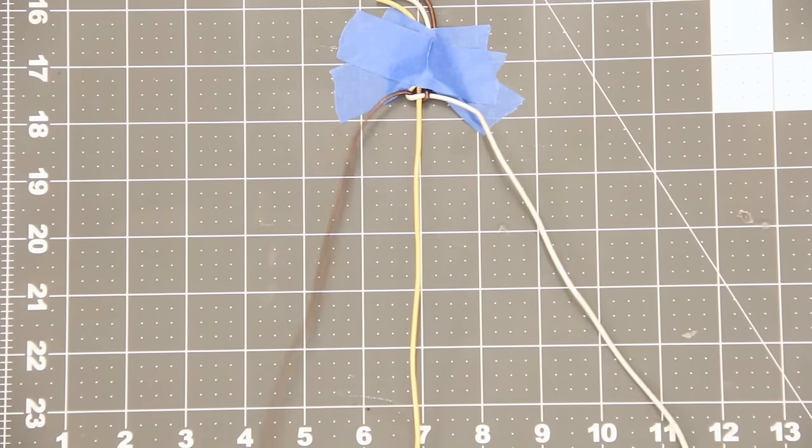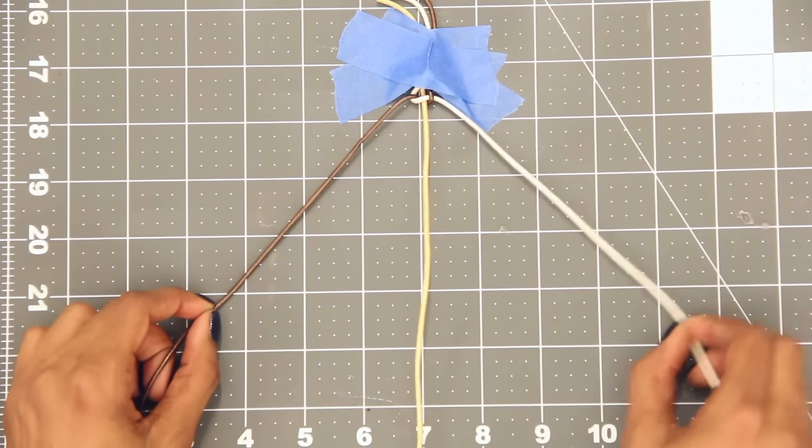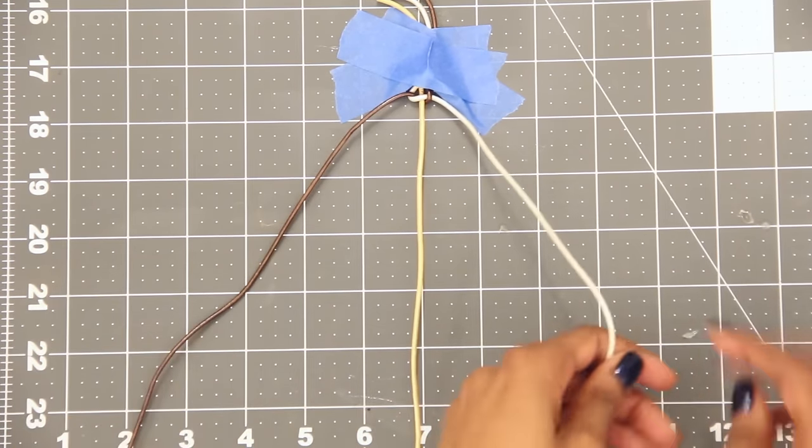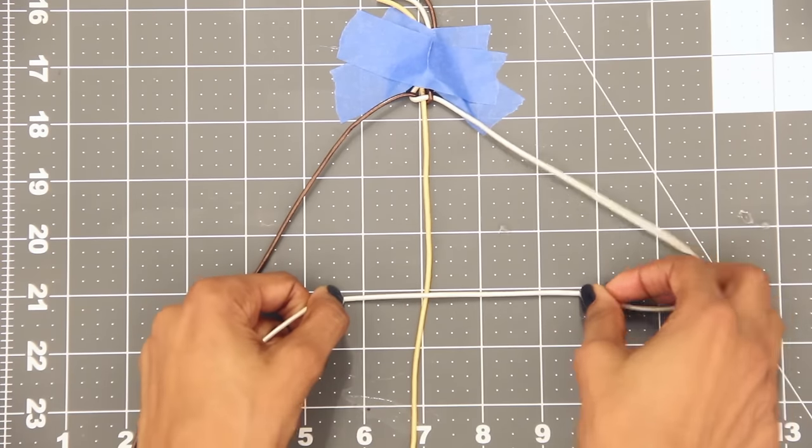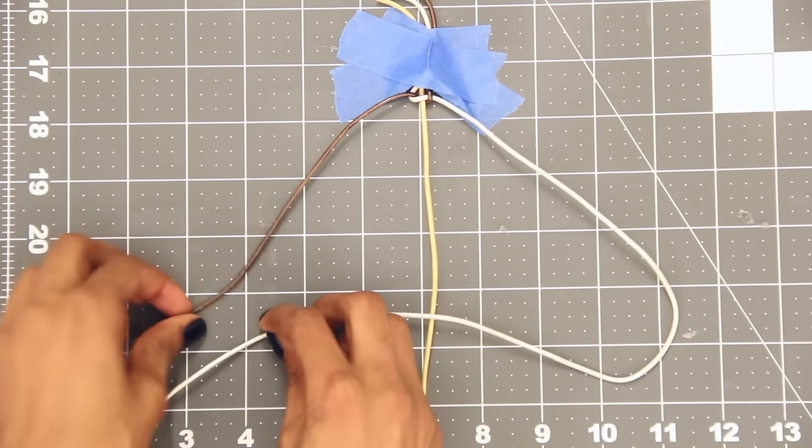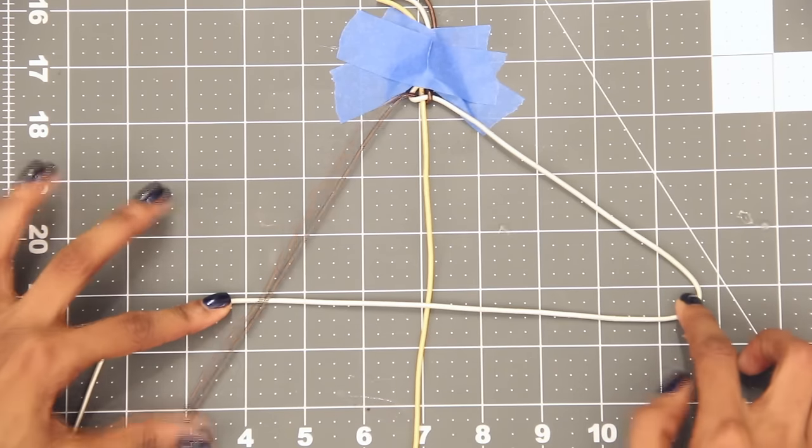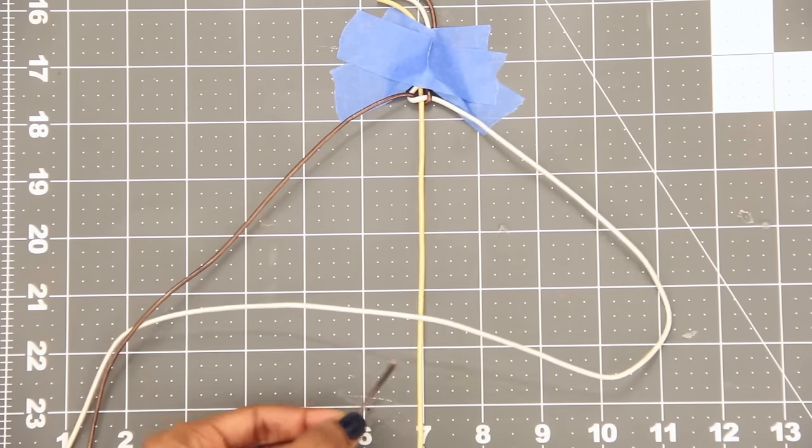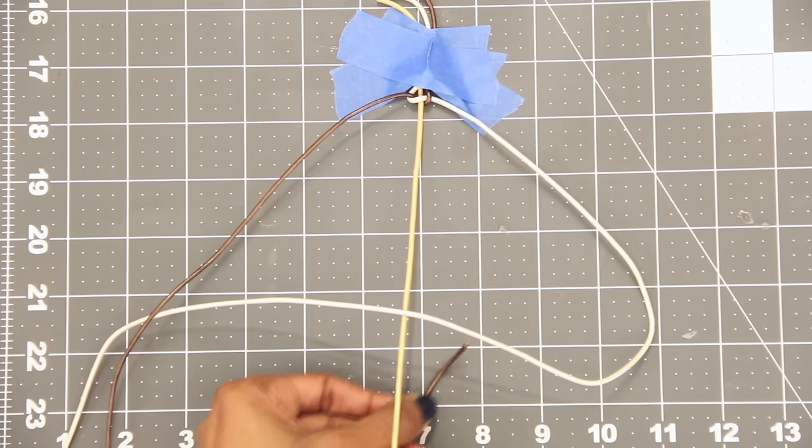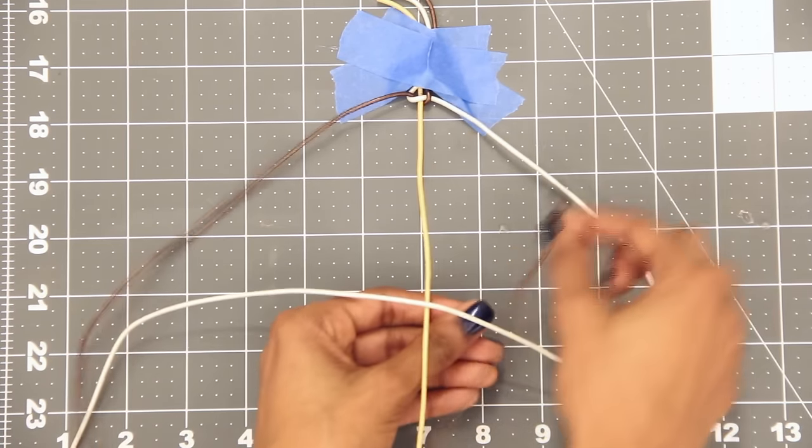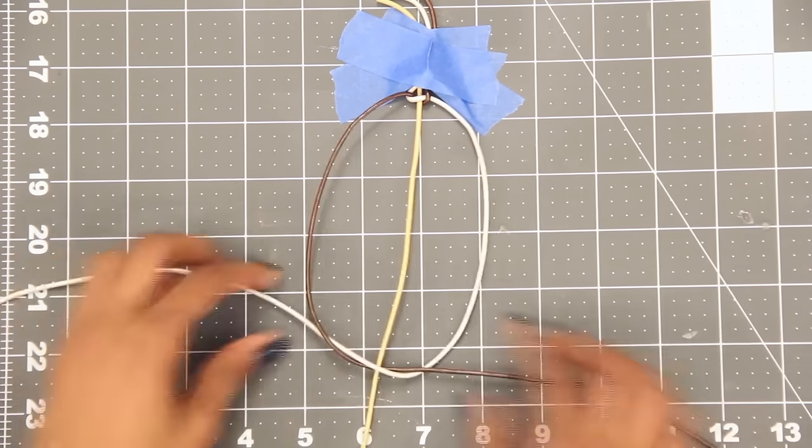To finish the knot, repeat those steps in reverse. Take the right strand and cross it over the middle and under the left. Then the left strand goes under the middle and up through this section. That's one square knot done.